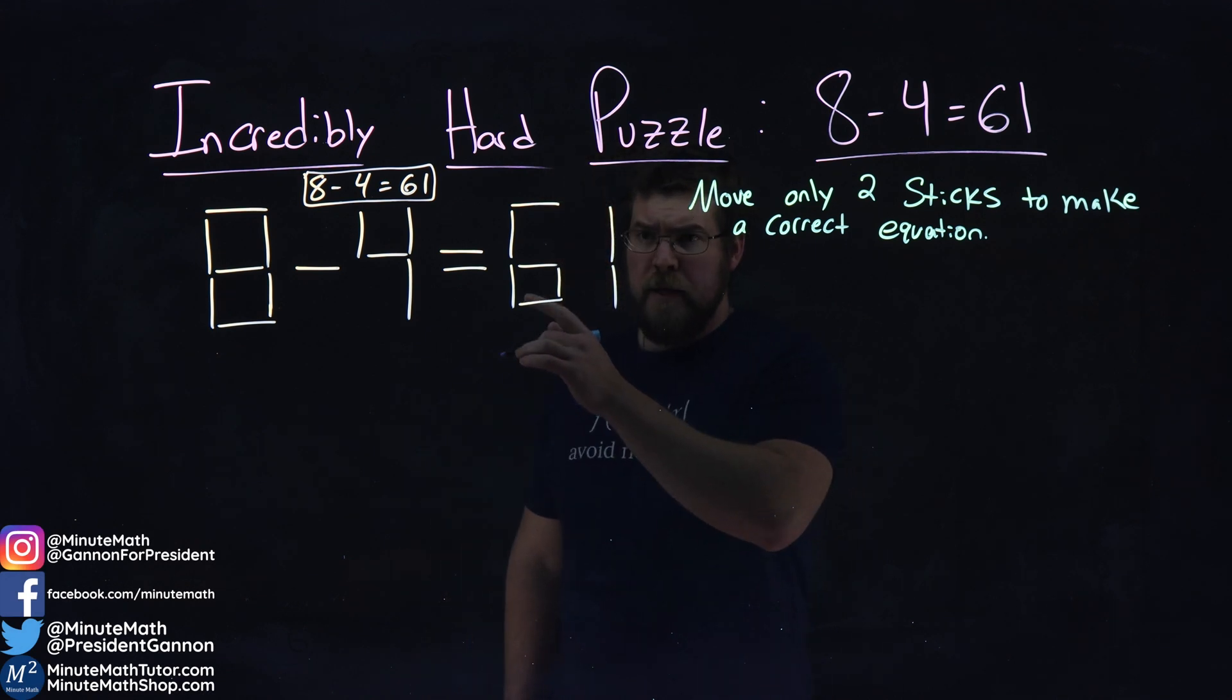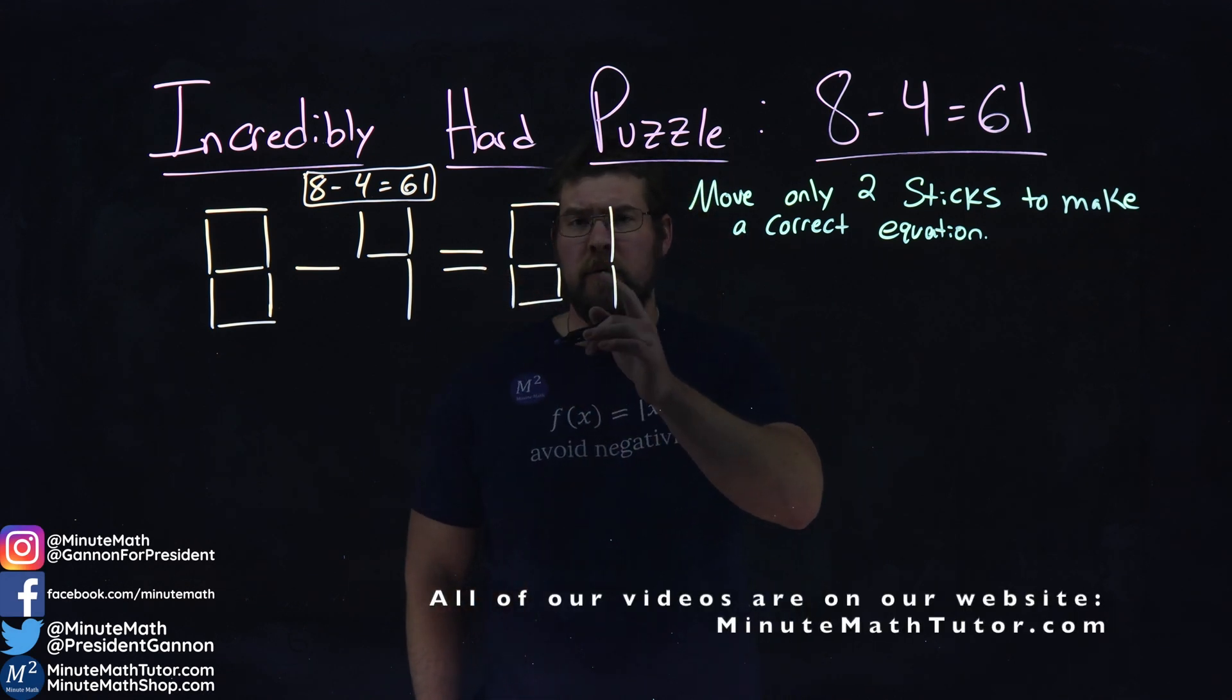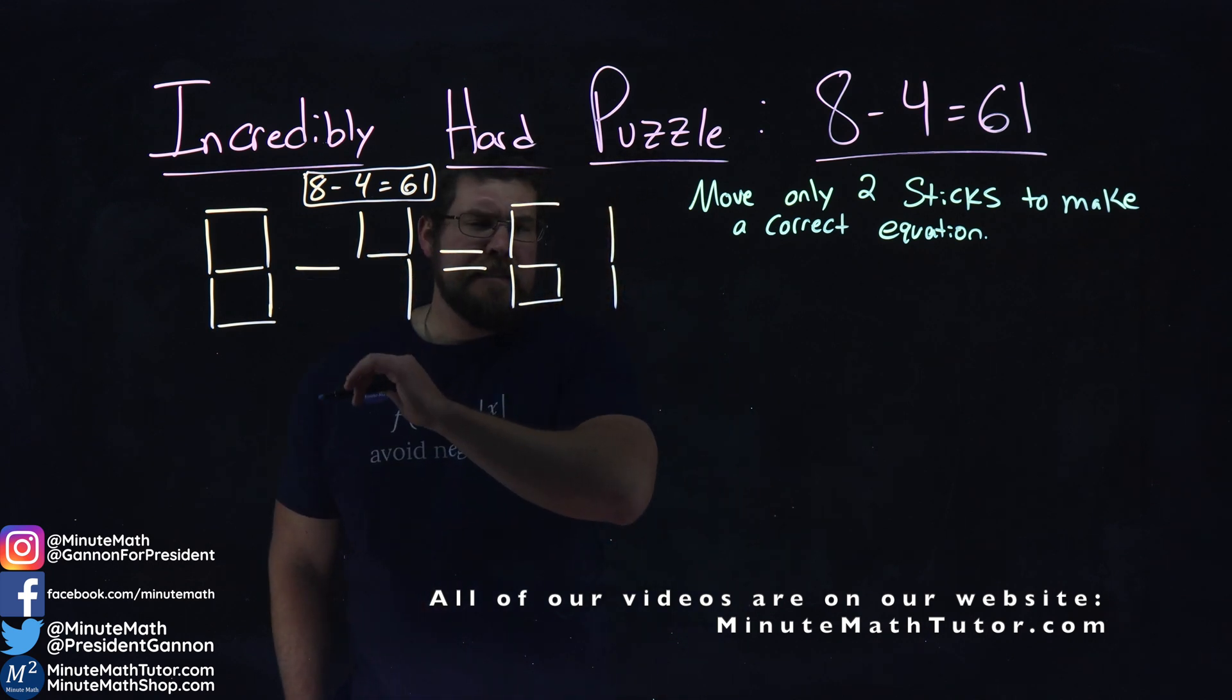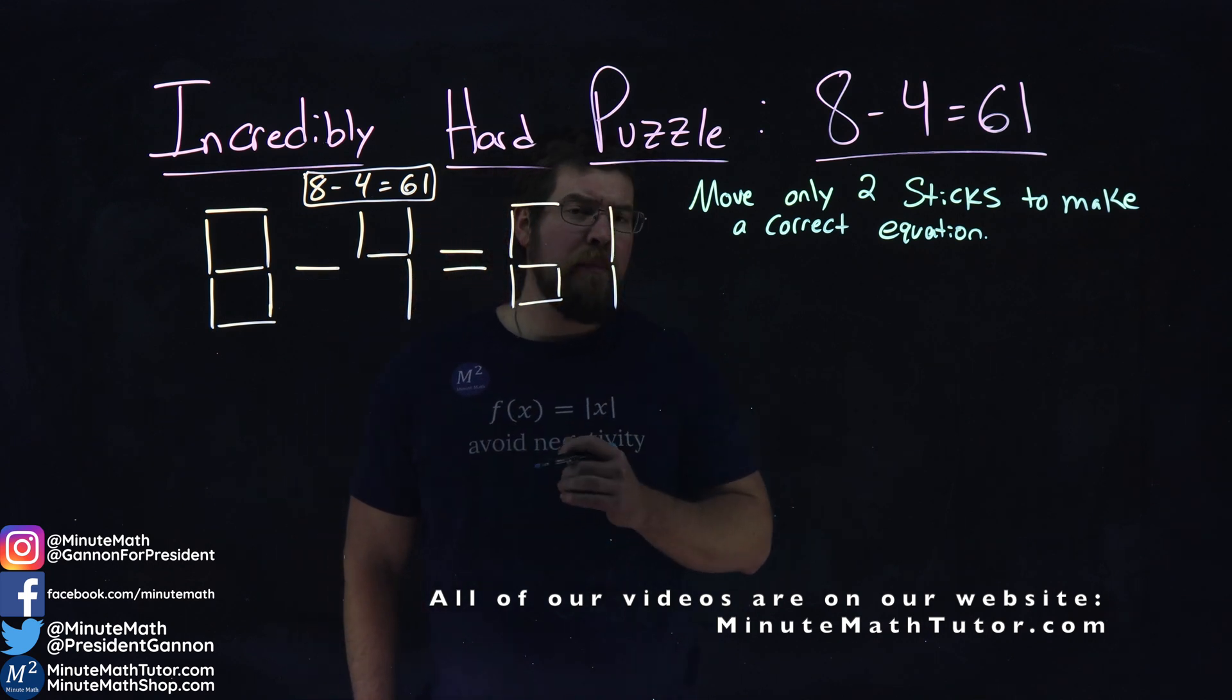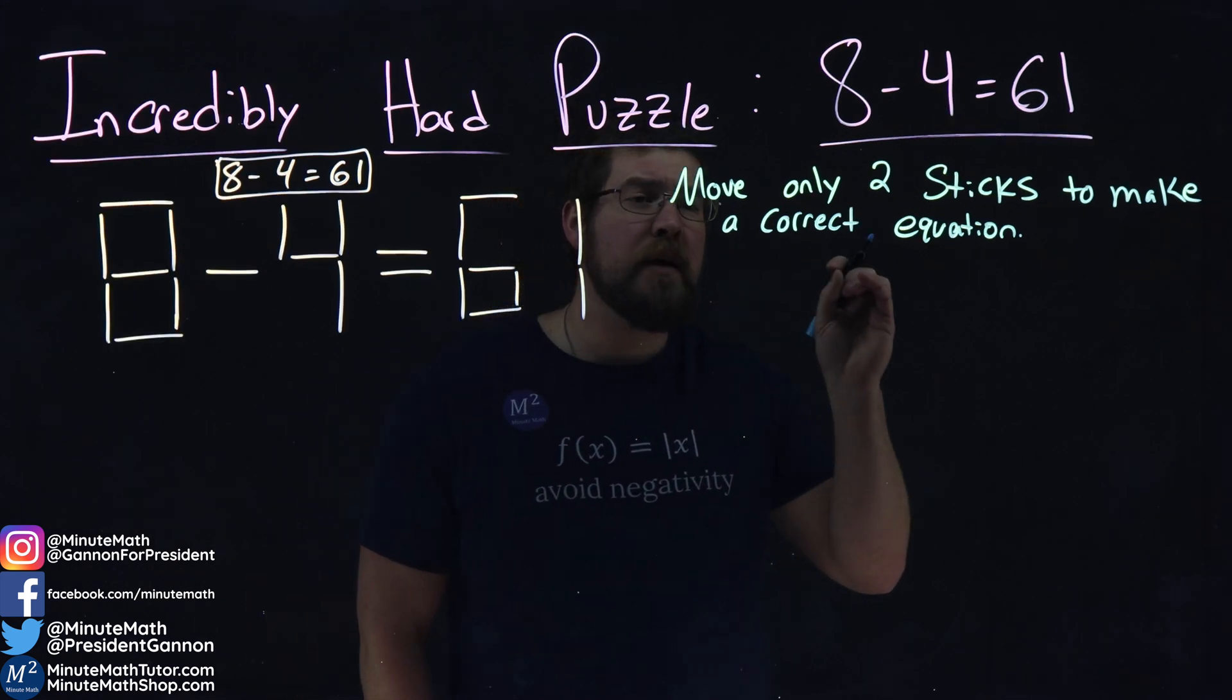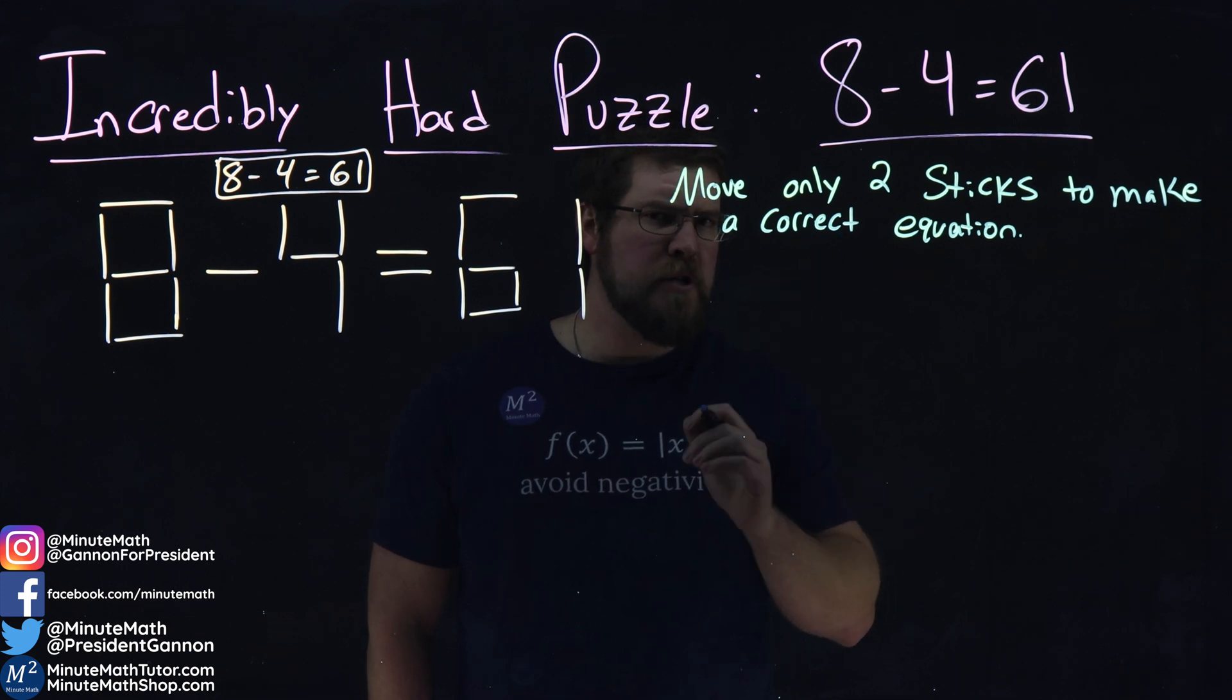We're given the problem right here: 8 minus 4 equals 61, but it's written uniquely with these sticks here. And this is a common problem that you would see with matchsticks. What we want to do here is move only two sticks to make a correct equation.